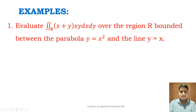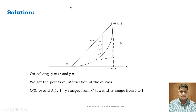Example: evaluate the double integral over region R of (x + y) · xy · dx · dy over the region R bounded between the parabola y = x² and the line y = x. In the solution, we are drawing and tracing the curves y = x and y = x². On solving these two curves, we get the points of intersection at O (origin, 0,0) and at point A (1,1). Therefore, y ranges from x² to x, and x ranges from 0 to 1.